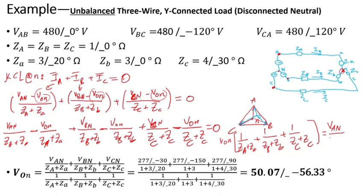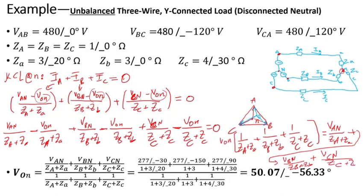Factoring gives: V_ON times (1/Z_a + 1/Z_b + 1/Z_c) equals V_AN over Z_a plus V_BN over Z_b plus V_CN over Z_c. Therefore V_ON equals the numerator divided by the denominator. I know V_AN, V_BN, V_CN, and all impedances Z_a, Z_b, Z_c, so I can plug in the numbers.